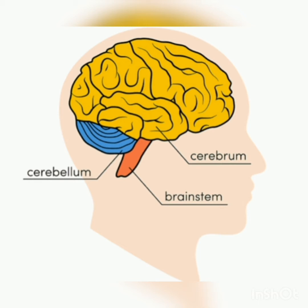Now, one by one we will learn about each part. The first part is the cerebrum. As already told, it is the largest part of the brain, as you can also see in the picture. This part of the brain is divided into two parts: the right hemisphere and the left hemisphere. It is the main part of the brain because it receives signals from the sense organs and also instructs our various body parts to react accordingly.